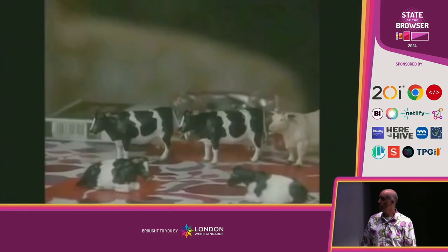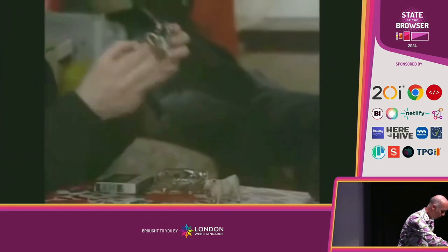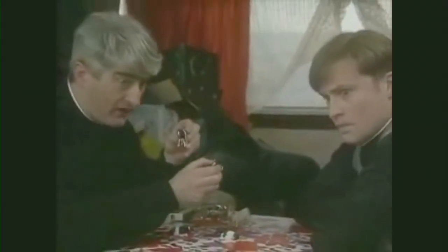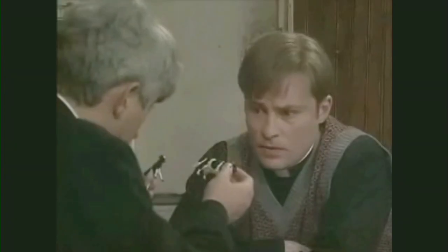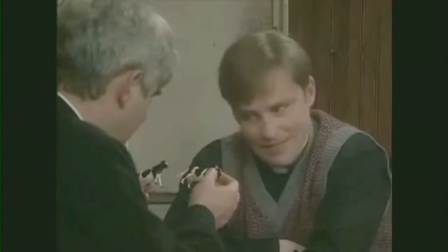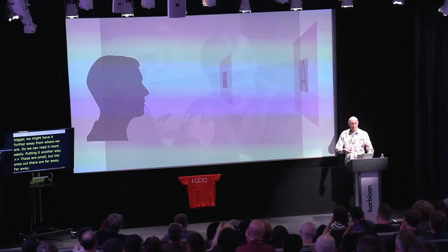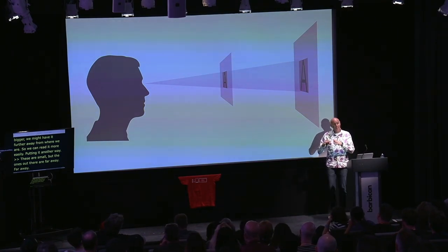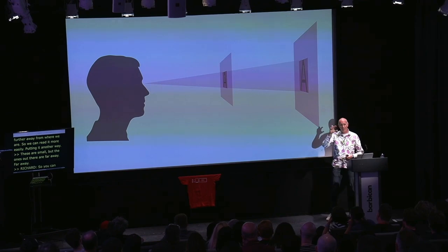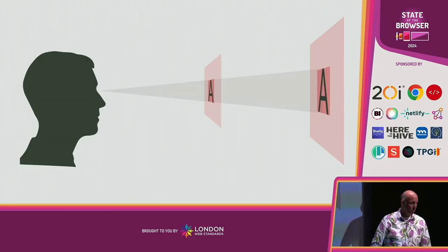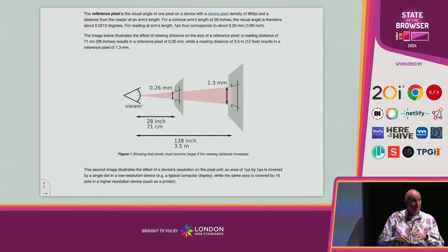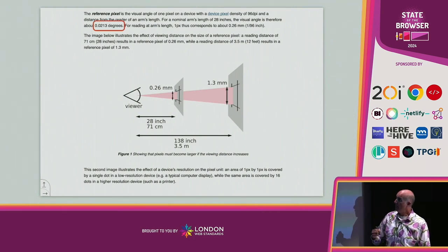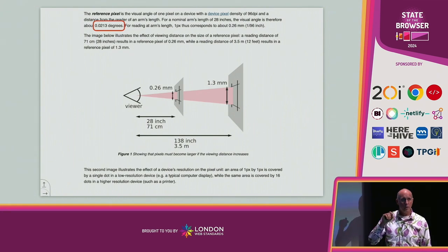You can consider text size as an angle rather than a physical length. So if the text is further away, to appear at the same size — the same angle — it needs to be bigger. As some of you may know, that's actually how deep in the CSS specifications a pixel is defined. It's defined as an angle, not as a physical length.